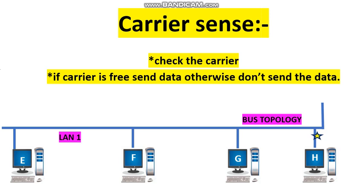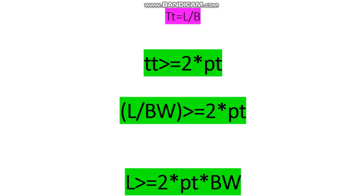Station E must send data until it receives the jamming signal, so the transmission time must be greater than or equal to 2 × propagation time. Since transmission time = length of data / bandwidth, we get: length of data / bandwidth ≥ 2 × propagation time. Therefore, length of data ≥ 2 × propagation time × bandwidth.